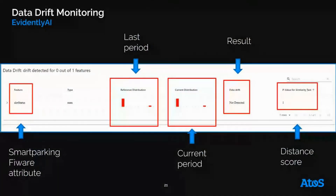To monitor data drift, which occurs when the input data distribution changes, we use the Python library Evidently AI. That service is placed as a recurring task — a cron job running twice a month or once a month — that checks whether the current distribution is different from the baseline distribution via the chi-square test, calculating the distance between input variables for the two periods. In this example, no drift is detected as the distributions are quite similar.